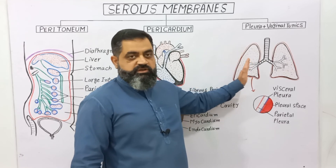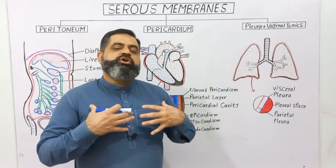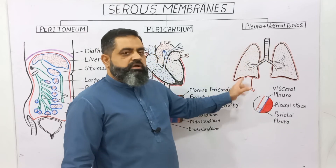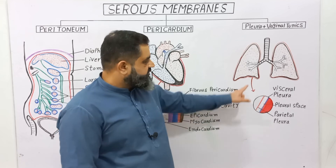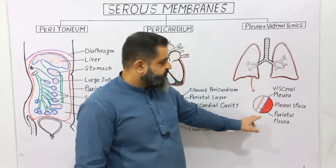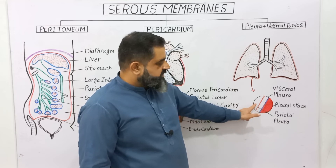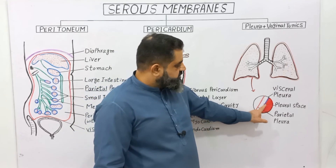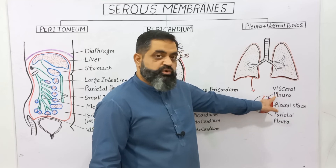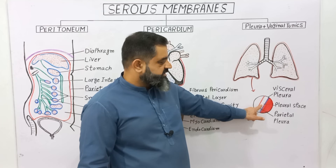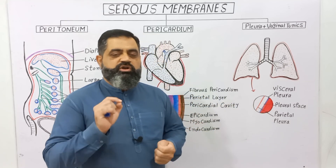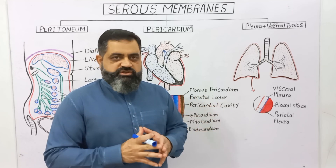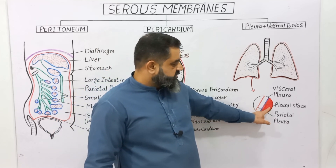Pleura is a serous membrane which surrounds our lungs, which are present in the thoracic cavity just below the ribs. If we look at the diagram, the lungs are surrounded by a membrane known as the pleural membrane. Taking a small piece and enlarging it: the outermost layer is known as the parietal pleura, also called the external pleural membrane, and the innermost layer is known as the visceral pleura, which surrounds the lungs. Between these two layers is a space known as the pleural space, which contains a small amount of serous fluid to avoid friction during the expansion and contraction of the lungs during breathing.